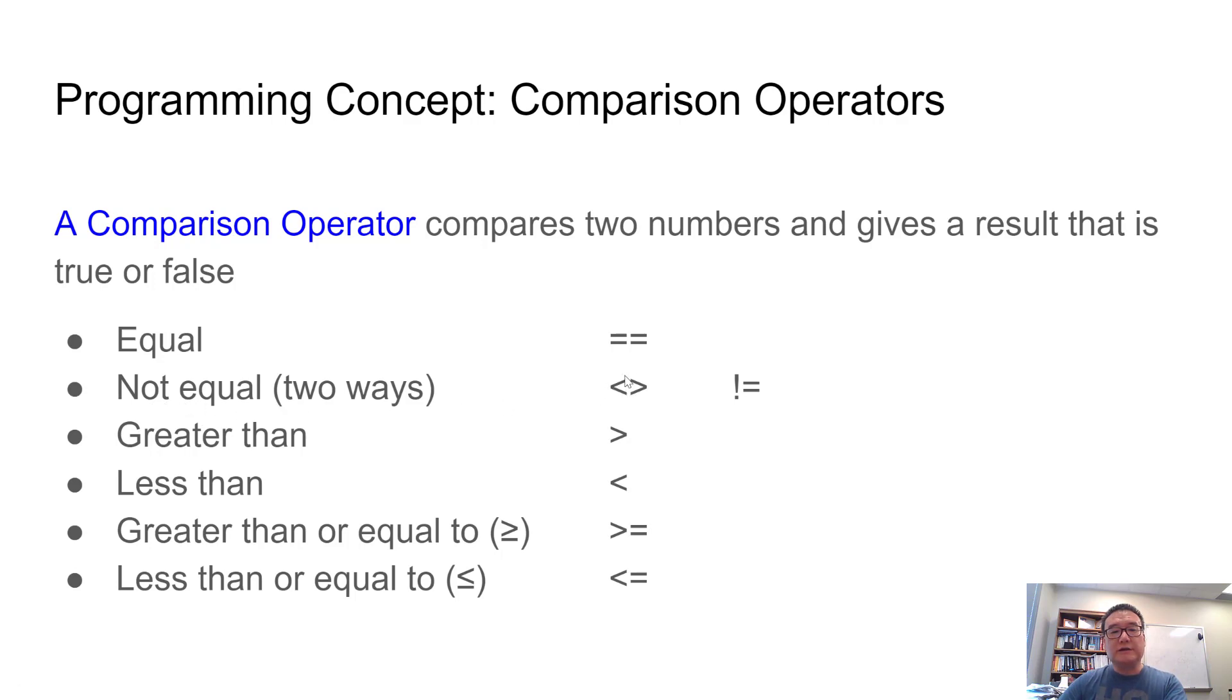There are two ways to express not equal. One is to use this less than sign and greater than. I guess this means that it's either less than or greater than, therefore not equal. Or you can also use this exclamation mark and equal. Exclamation mark in programming often means not. So negation. This is literally, you can read that as not equal. And greater than, less than should be familiar. Greater than or equal to, we use this. And less than or equal to, we use this.